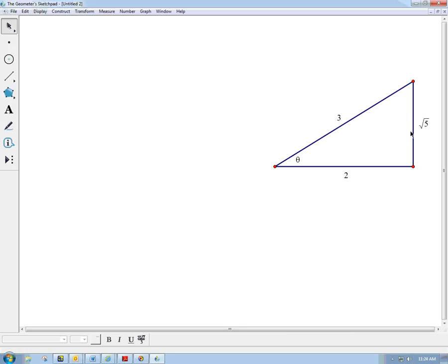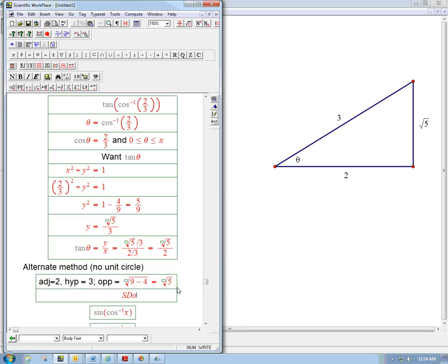And now what's the tangent? It's root 5 over 2, opposite over adjacent. And so that's another way to do it. So, tan theta is just root 5 over 2.